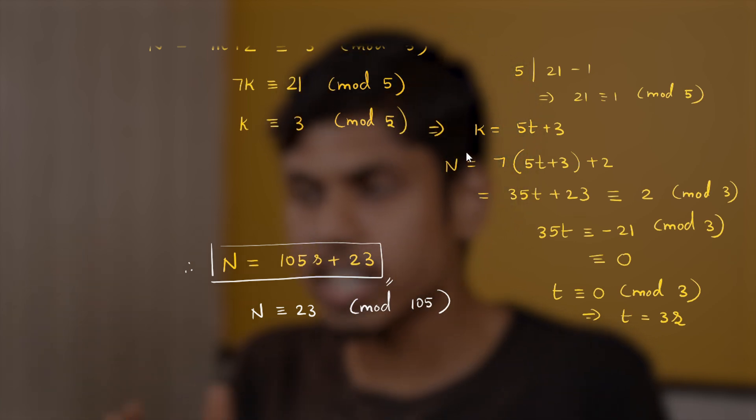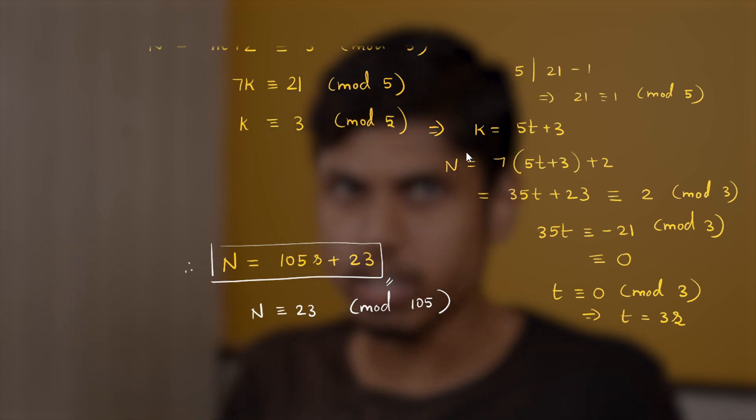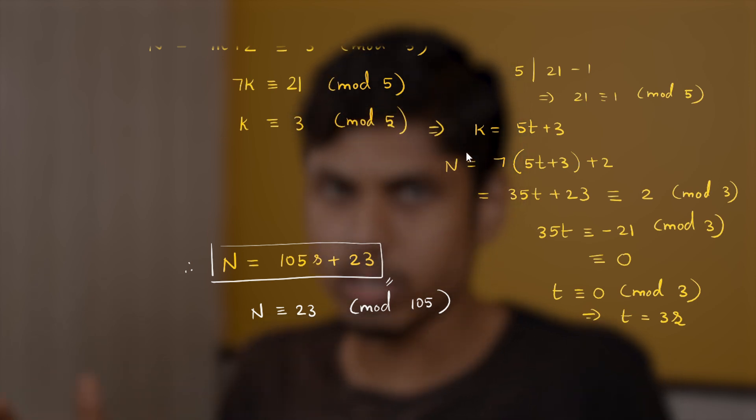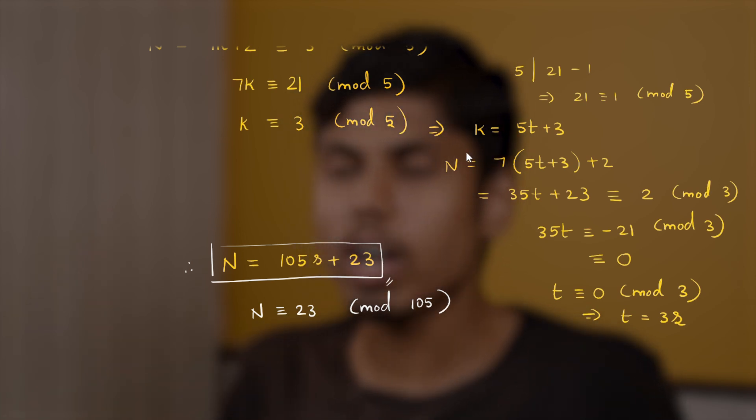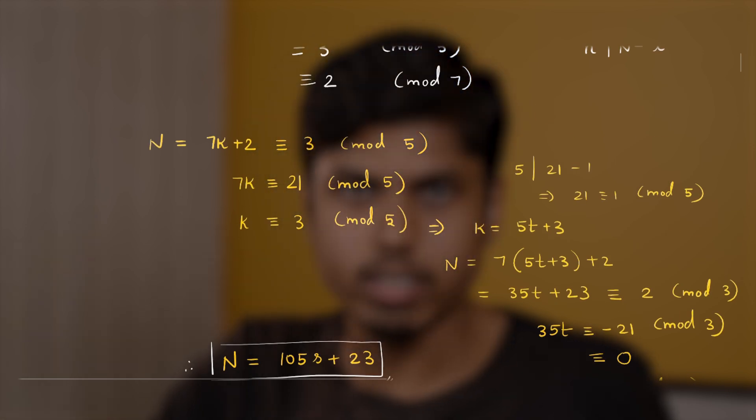In certain cases such cancellations and operations might not be trivial. And we have to use CRT to conclude something. For example what if you have some variables instead of those numbers. So during those circumstances CRT plays a crucial role. So now let's define the CRT.